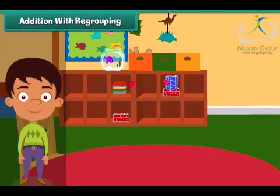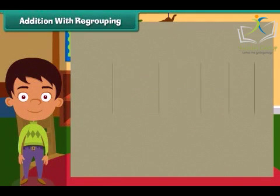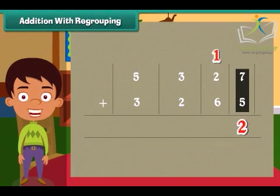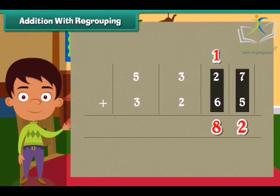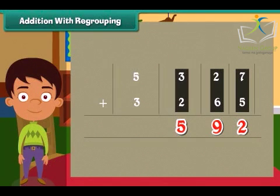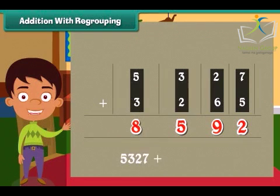Addition with regrouping. Let's try the addition of 5327 and 3265. We start by adding the values at the ones place: 7 plus 5 is equal to 12. Write 2 below in the ones line and carry 1 above in the tens line. Next we move to add the tens: 2 plus 6 plus 1 is equal to 9. Write 9 below in the tens line. Now we add hundreds: 3 plus 2 is 5. Similarly, add thousands: we get 8. Therefore, the addition of 5327 and 3265 is equal to 8592.